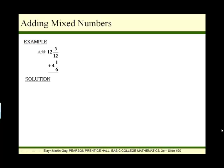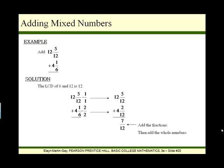For example, we have 12 and 5 twelfths, and we're adding that to 4 and 1 sixth. So the idea is to just take the fraction parts and get a common denominator. The LCD is going to be 12. Our first fraction already has a denominator of 12. We need to change our second fraction so that it has a denominator of 12, and then we get 4 and 2 twelfths for the second fraction. Now they have common denominators. All we have to do is add the whole number parts together, 12 plus 4 is 16, and add the fraction parts together, which becomes 7 over 12. Our final answer is 16 and 7 twelfths.